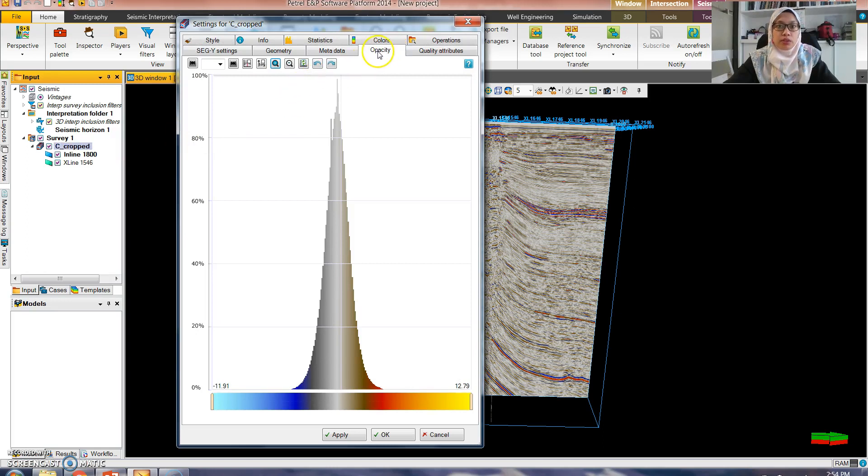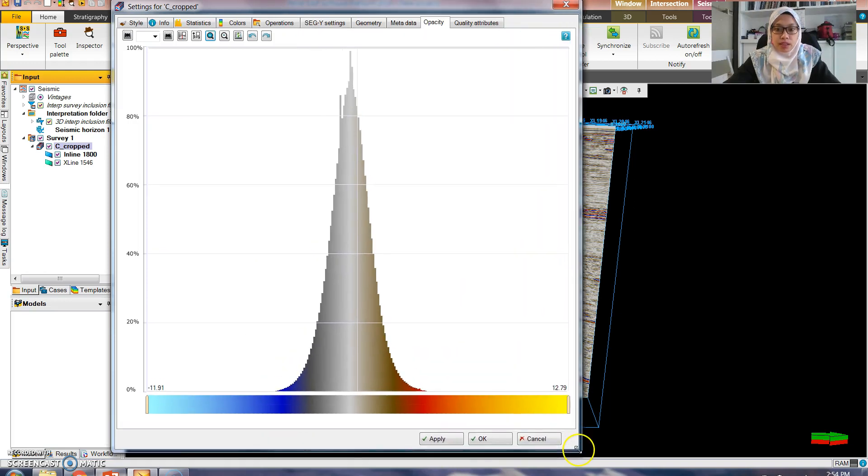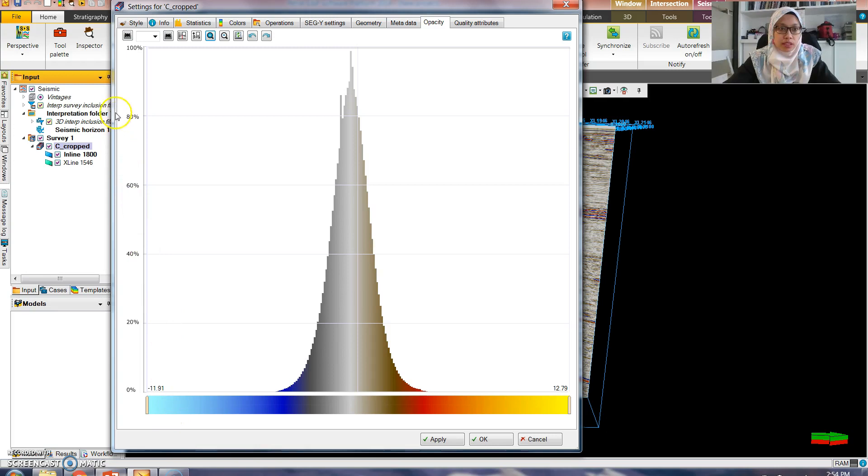You will go to the opacity and then you can see this graph. This graph is actually the same graph that we see in our lecture notes. The y-axis is showing from 0% to 100%, showing the numbers of samples, how many percentage of samples in each zone.